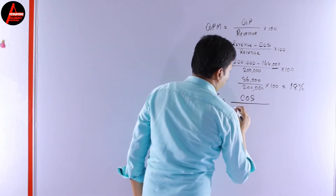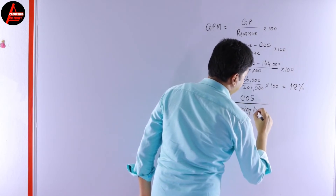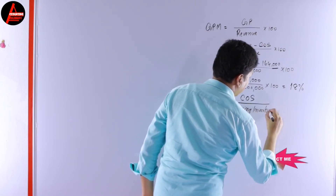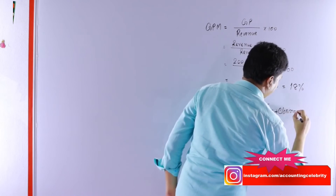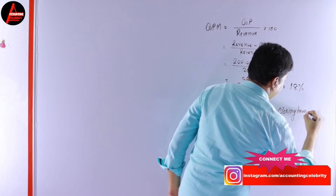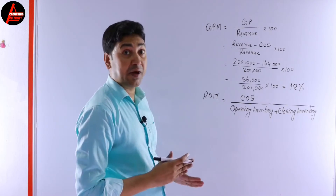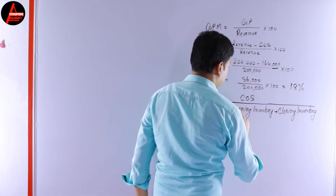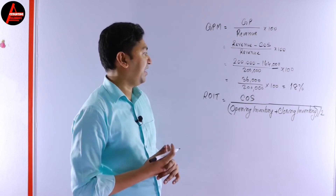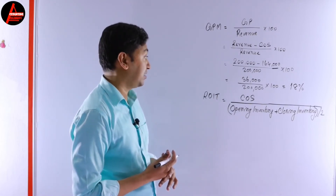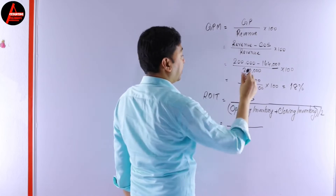Opening inventory plus closing inventory, divided by 2. We already have the cost of sales: $164,000. Now, looking at the question, opening inventory is clearly given as $11,000.